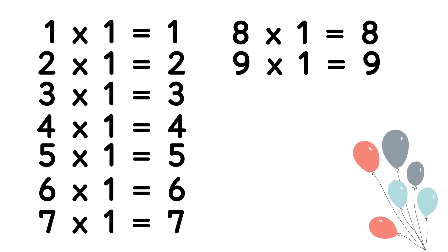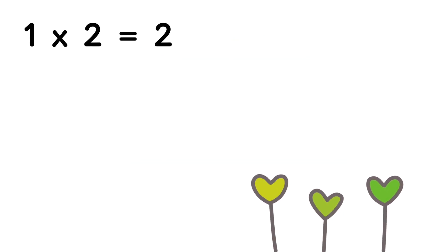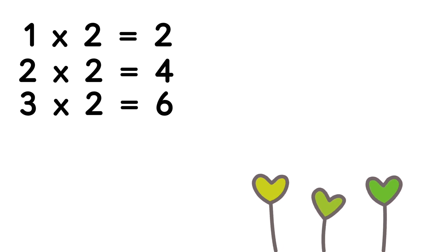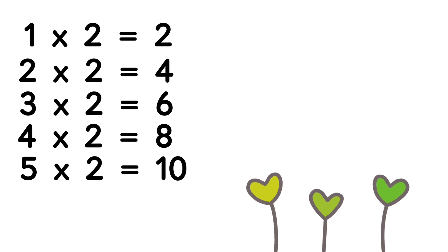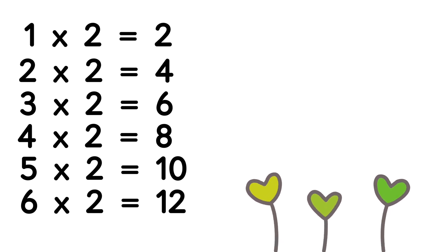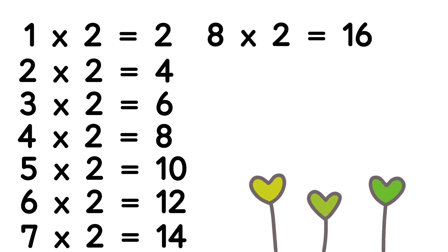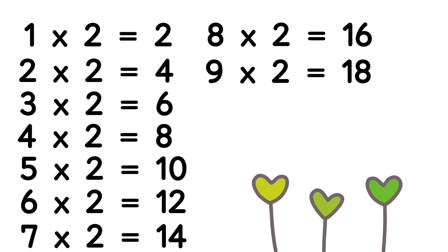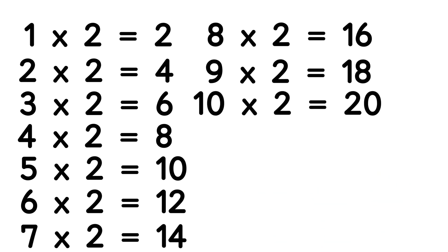9 ones are 9, 10 ones are 10. Table of 2: 1 two is 2, 2 twos are 4, 3 twos are 6, 4 twos are 8, 5 twos are 10, 6 twos are 12, 7 twos are 14, 8 twos are 16, 9 twos are 18, and 10 twos are 20.